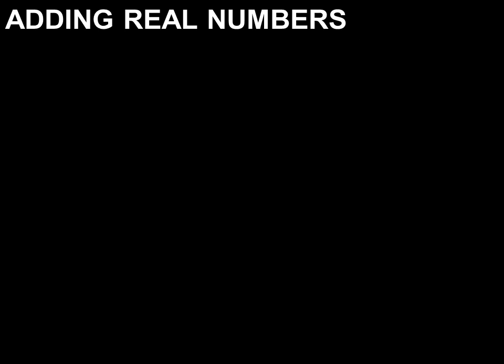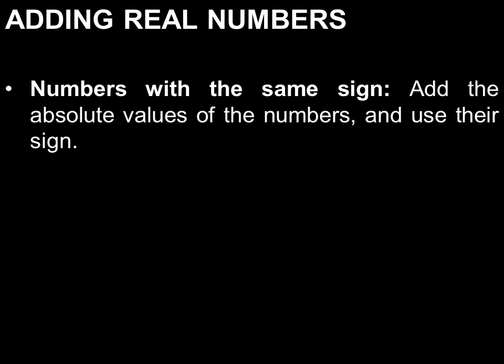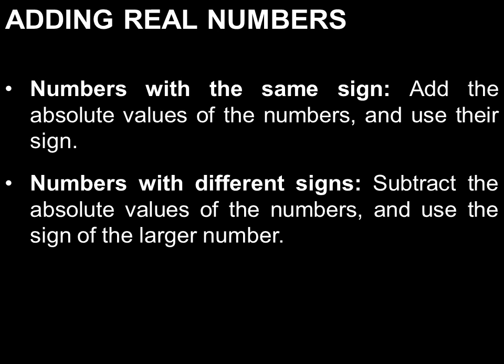Let's now move on to adding real numbers. For numbers with the same sign, add the absolute values of the numbers and use their sign. For numbers with different signs, subtract the absolute values of the numbers and use the sign of the larger number.